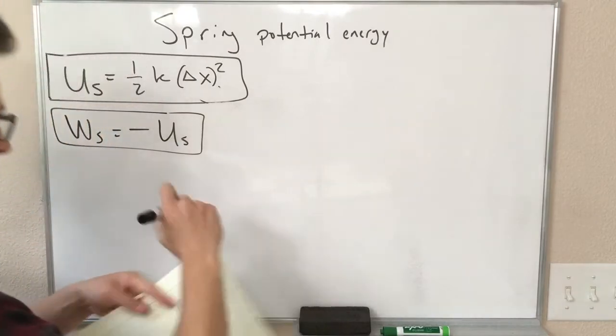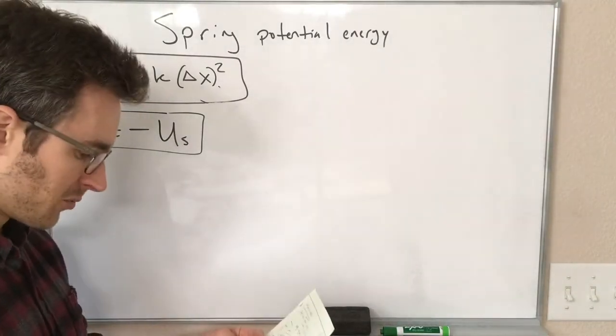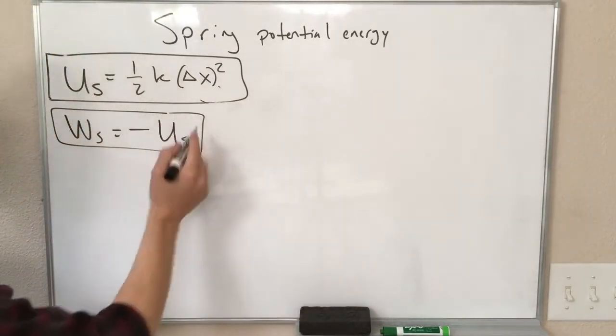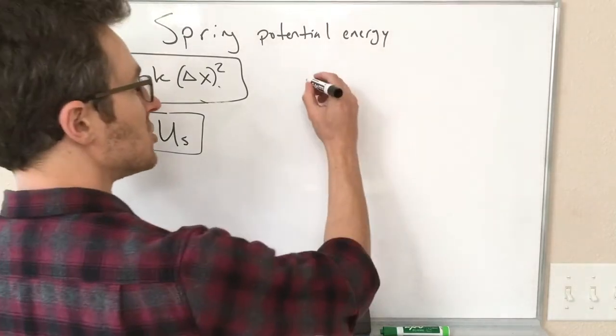How does this fit into what we have been doing? Well, if we have a spring that does work on an object to speed it up or to slow it down, and we know what's going on with this work, we can use the work energy theorem.